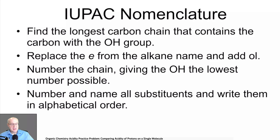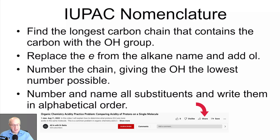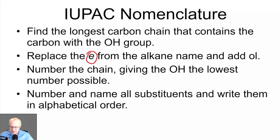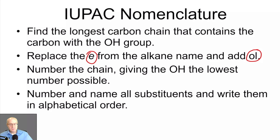For example, if it's ethane, remove the E from the name and replace it with the suffix -ol. If you look at things like ethanol — you've all heard of that one — propanol, isopropanol, methanol: these are all alcohols because they end in the suffix -ol.